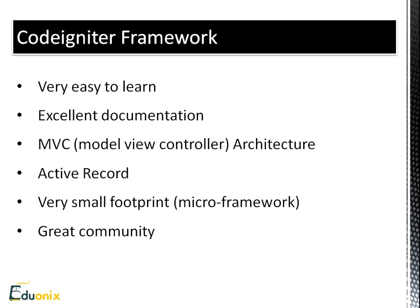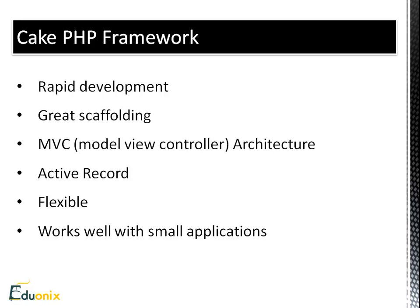CodeIgniter is also sometimes called a micro framework because it has a very small footprint and is very lightweight. It also uses MVC and Active Record and has a great community. CakePHP is known for rapid development — you can set up a basic site in five minutes using its scaffolding feature, creating controllers, models, and views in the browser without writing any code. It also uses Active Record, is very flexible, and works really well with small applications, though it's not typically used for large enterprise-level sites.